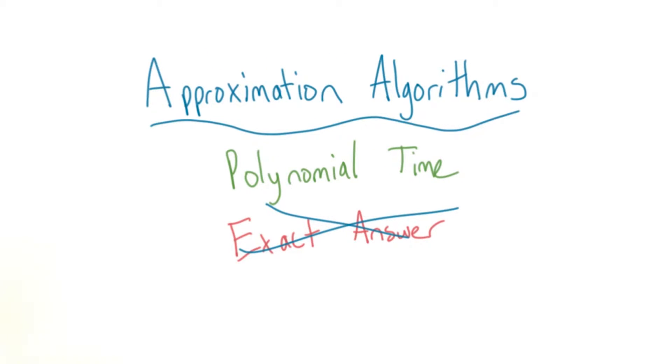The second are approximation algorithms, which don't always find the exact optimal solution, but generally find a near-optimal solution. They tend to run in a more reasonable amount of time, and several are even polynomial time.